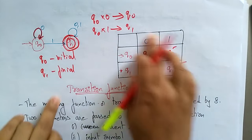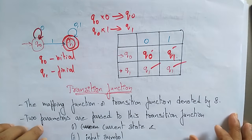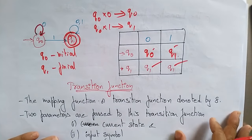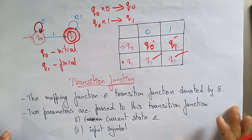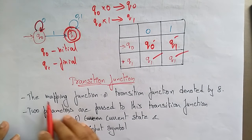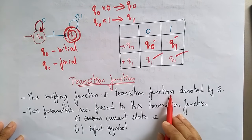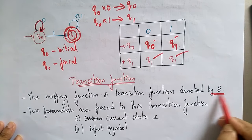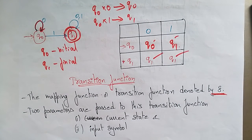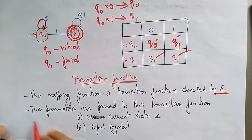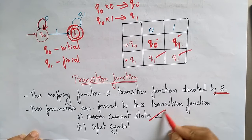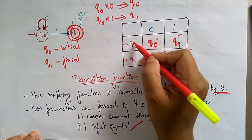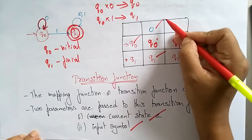Now let me explain the transition function. The mapping or transition function is denoted by delta. Two parameters are passed to the transition function: the current state and the input symbol. The transition function always returns a state, called the next state.